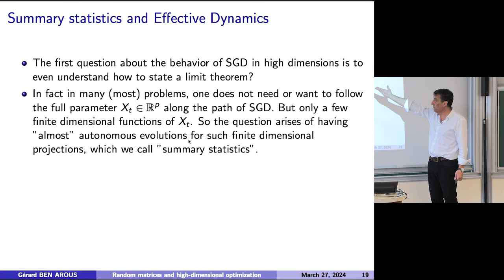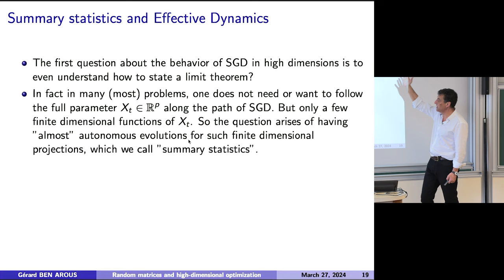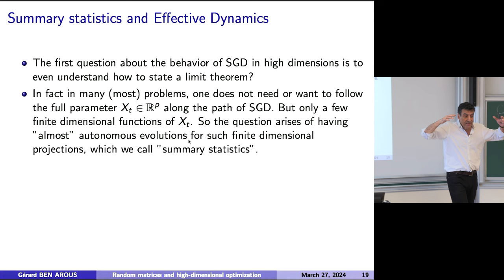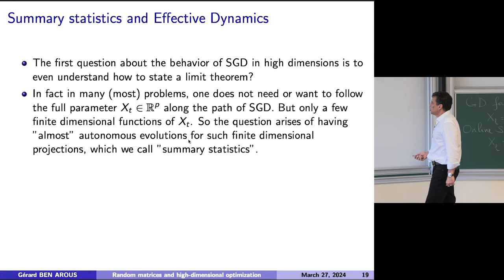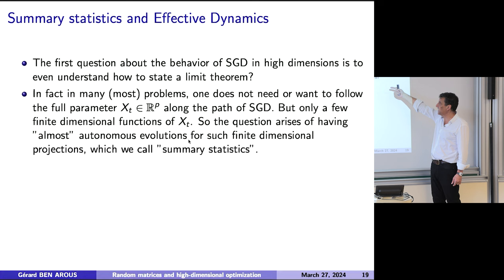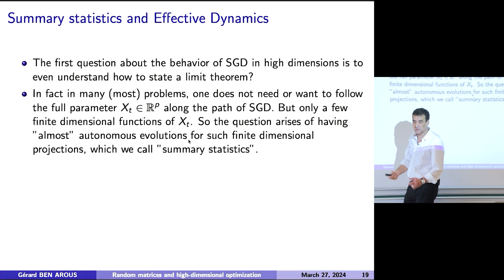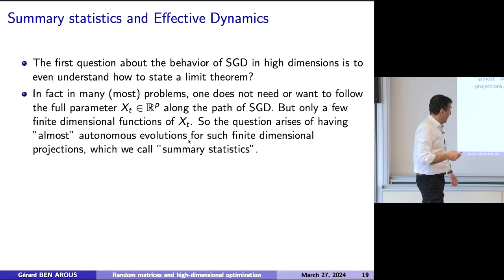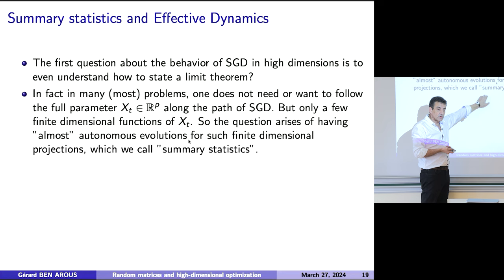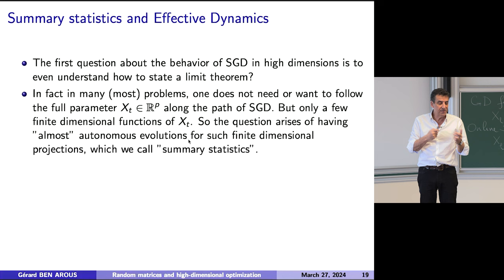What I'm saying is that you don't need to follow the full parameters, but only a finite-dimensional function — a projection. Your x_t is a very high-dimensional thing. When this dimension goes to infinity, what does it mean to have a limit? But if you project in dimension 17, then maybe the projection has a limit. The question is: can we imagine having autonomous evolution for finite-dimensional projections? They cannot be really autonomous — they will be almost autonomous. If you want a projection in dimension 17 to be autonomous and you still have 10^9 - 17 directions, it cannot be completely autonomous, but maybe almost. These projections, when they work, we will call them summary statistics.